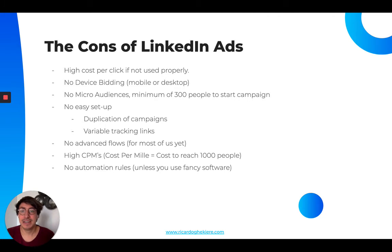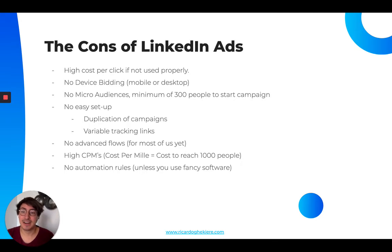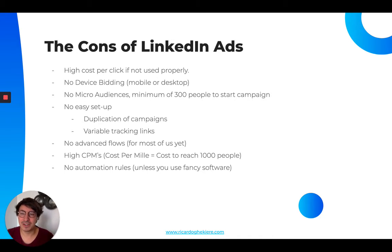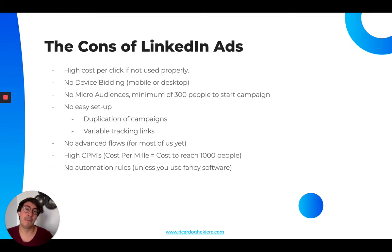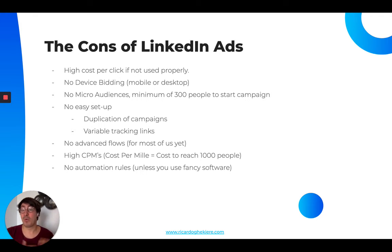The fourth thing is the not-easy setup. If you're used to other platforms like Google or Facebook, you'll notice this is actually a lot slower to build. It's very hard to duplicate campaigns or duplicate an ad set and create a new one — not very easy to do. The second issue here is variable tracking links: UTM parameters are a way to tell where your visitors are coming from and which campaign is converting best. This is very easily done on Facebook and Google because there are variables.